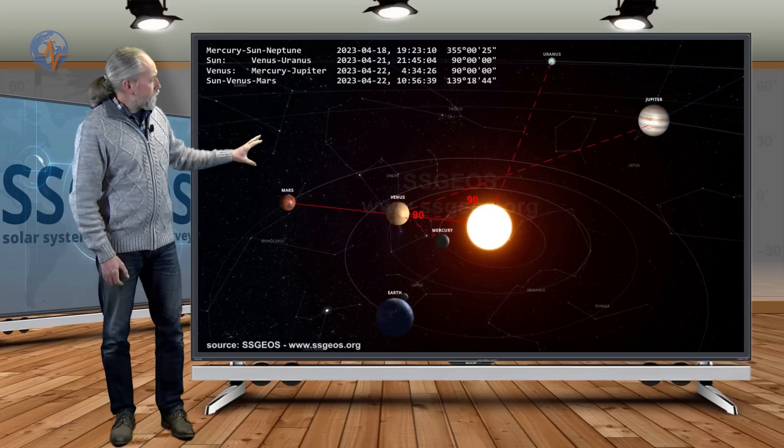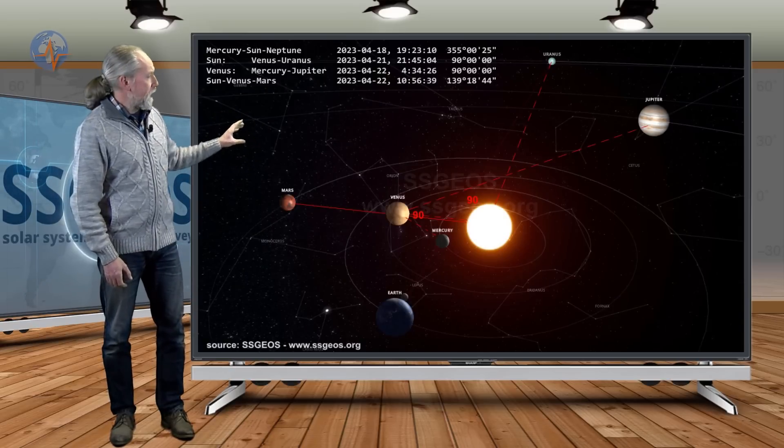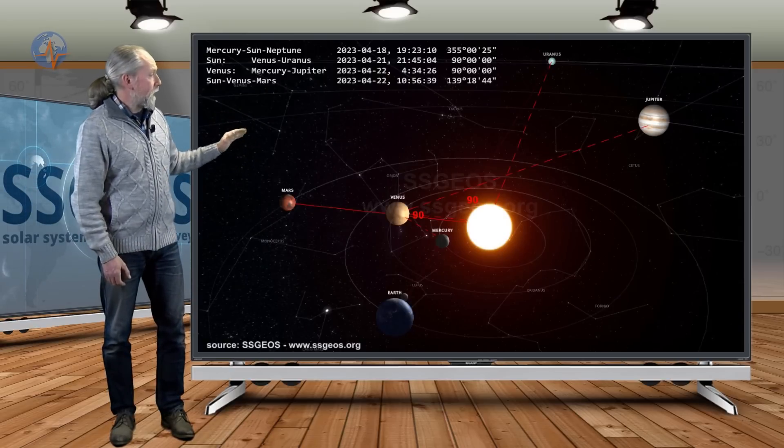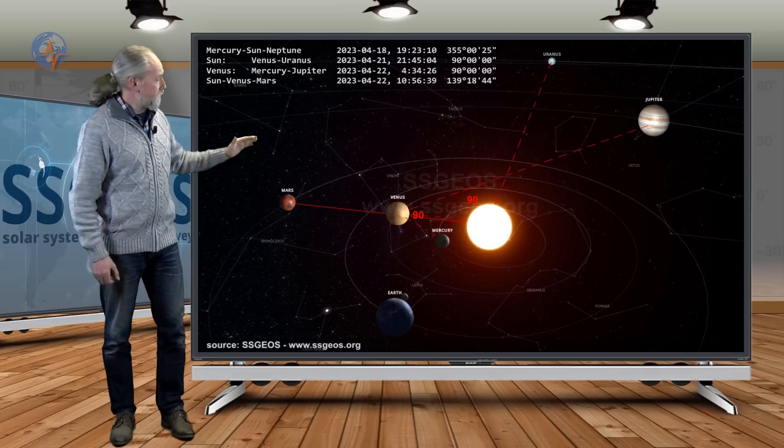If we look at the solar system we see that on the 18th we had Mercury Sun Neptune conjunction and some stronger seismic activity.